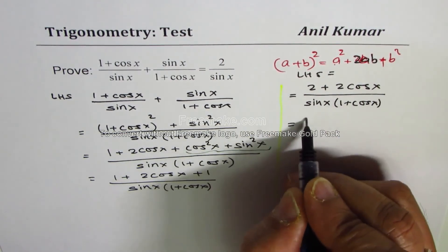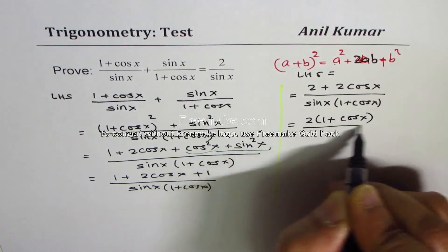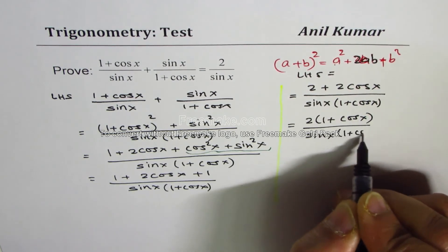We can take 2 common, so we get 2(1 + cos x) in the numerator divided by sin x times (1 + cos x).